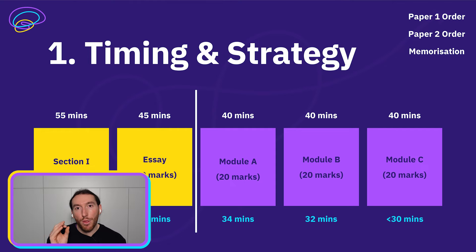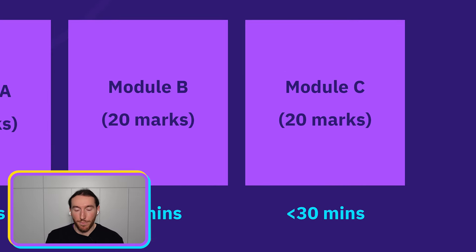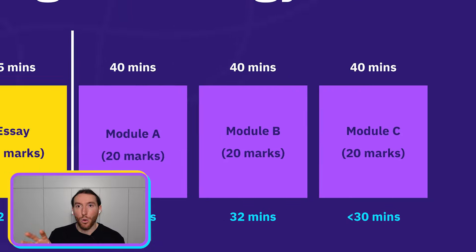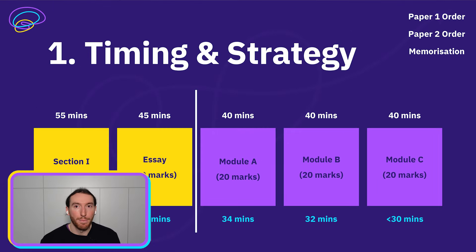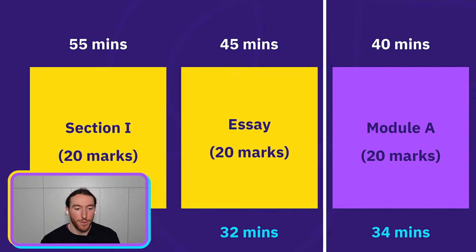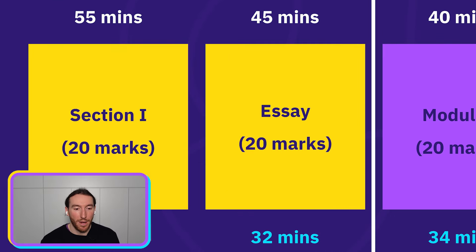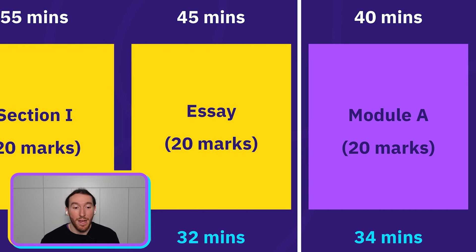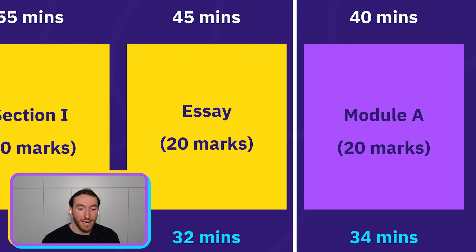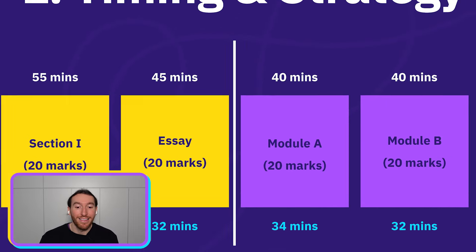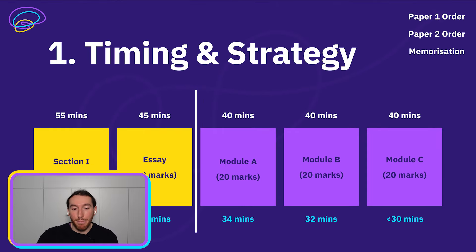Module C: 30 minutes or less for the full paper. You need to prepare your drafts accordingly and make them a bit shorter. You complete section one first for paper one, and borrow five minutes from your common module essay and put it towards section one. So you're treating your common module essay like Module A and B.